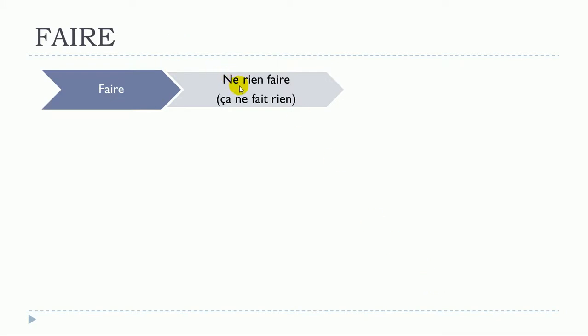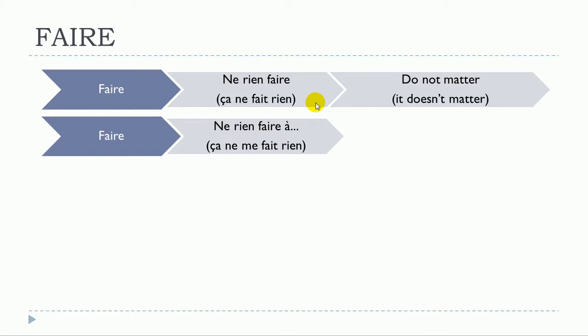Ne rien faire—and especially this sentence, it's quite common to use this: ça ne fait rien. The translation would be 'it doesn't matter'. So ça ne fait rien, ça ne fait rien. Another little modification: ça ne me fait rien. In that case it's for me, and the translation would be 'I don't mind'.